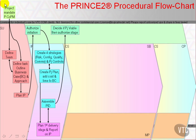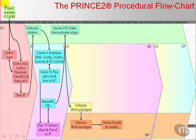When we get a positive result from the Authorise a Stage decision, this authorises the Project Manager to start the dialogue that delegates work packages to team members or team managers, who then receive the work package. The team member then conducts the technical work to create the results to quality specification, and also to create progress reports called checkpoint reports, described in Appendix A at Template Number 3.